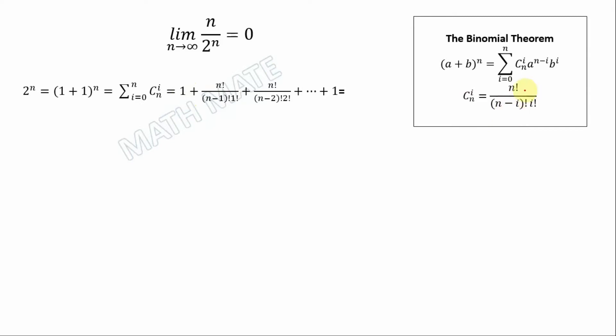In the next step we plug into this formula i equals 1, so we have n factorial divided by n minus 1 factorial multiplied by 1 factorial. And in the next step we also put i equals 2.